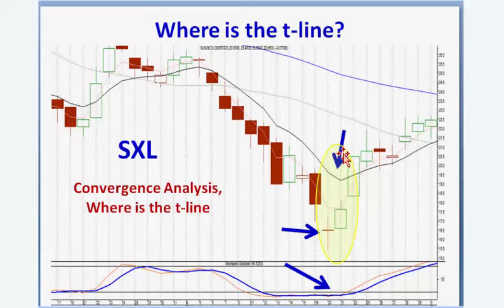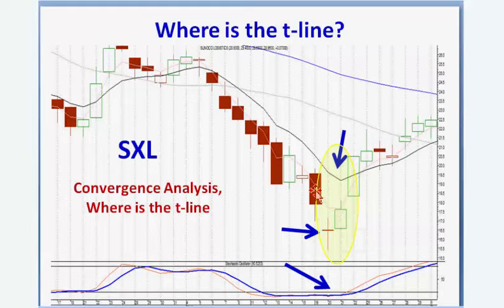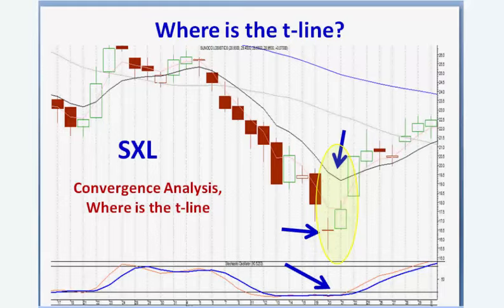If you were short and saw it gap down, if it has enough strength to come back up through the high of the doji, you close out your position. You can also be buying at that point with the expectation it's going to come back up and test the T-line. This is all based upon what human nature does time after time — when you see a gap down in the oversold area, start watching for a buy signal.